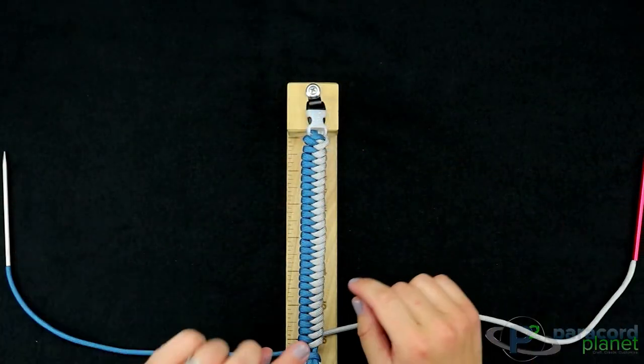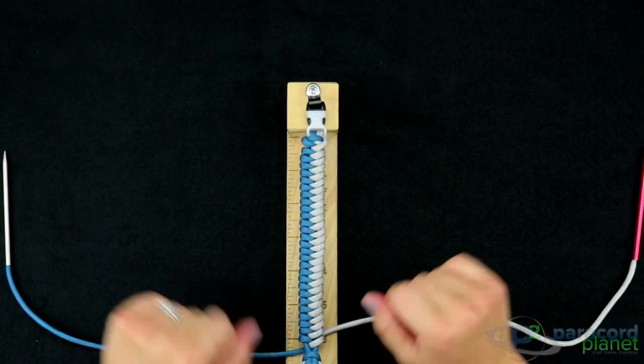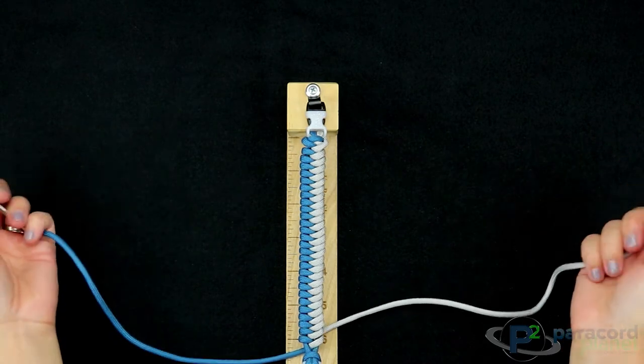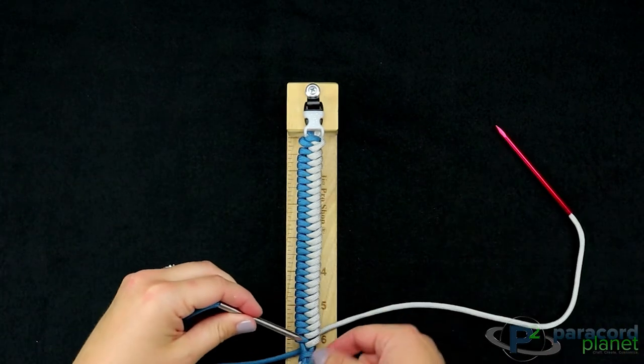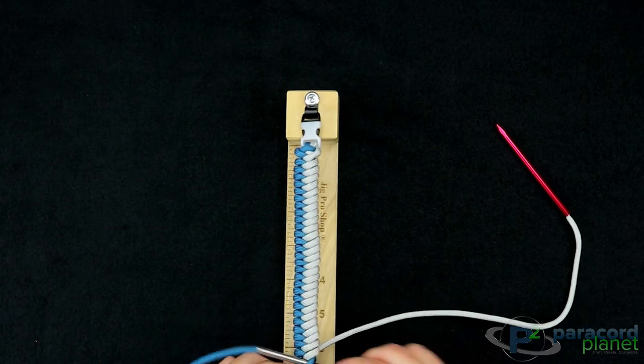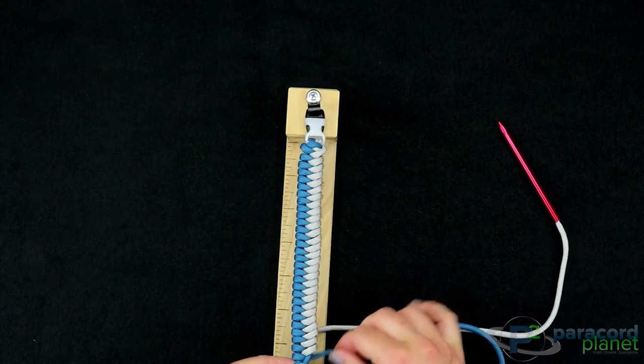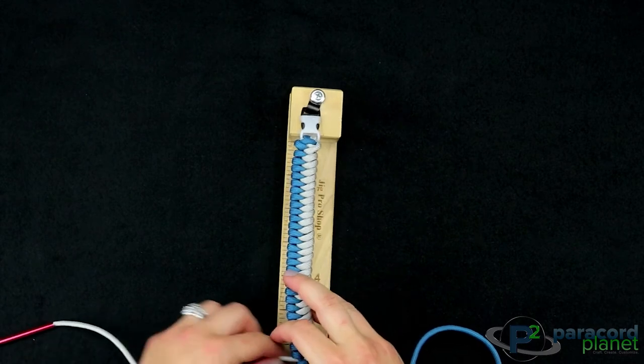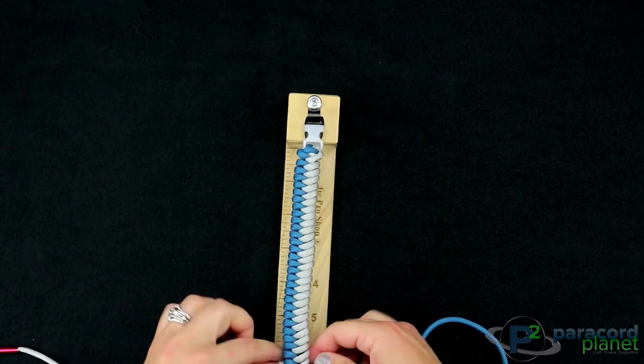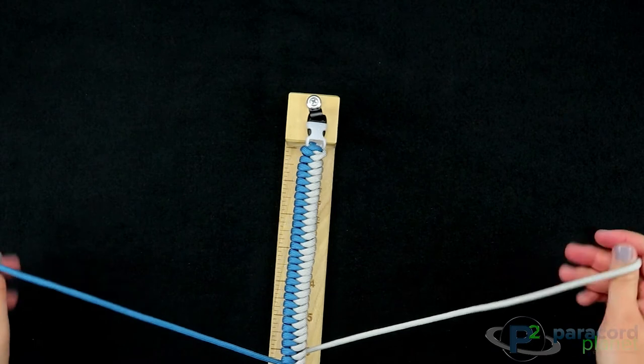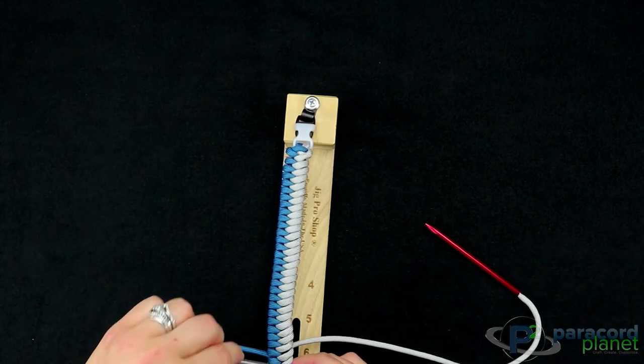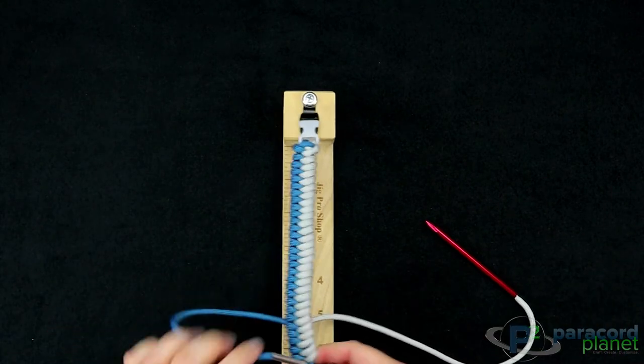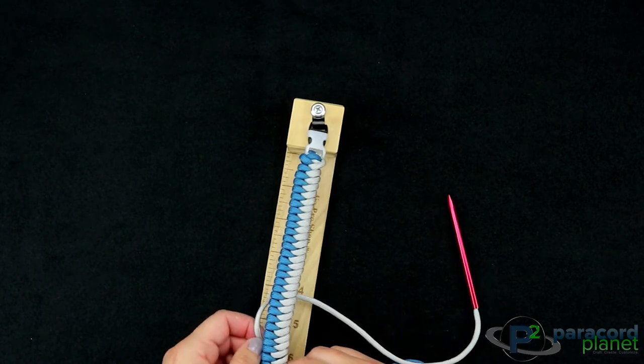This is what I have so far on my snake knot viceroy. I have now attached the fids to do these last couple of stitches because you get close to the buckle and you can't really get the cord in by yourself. If you don't have fids we do have them on our website, or you can use needle nose pliers or something like that to assist you with the end part.